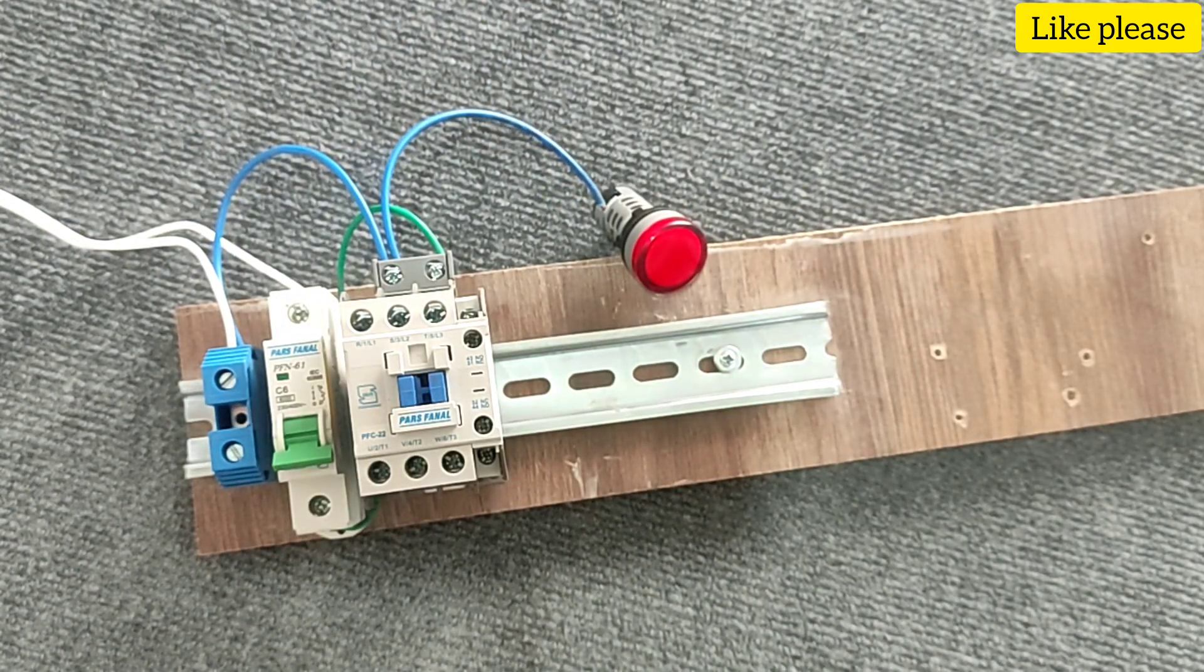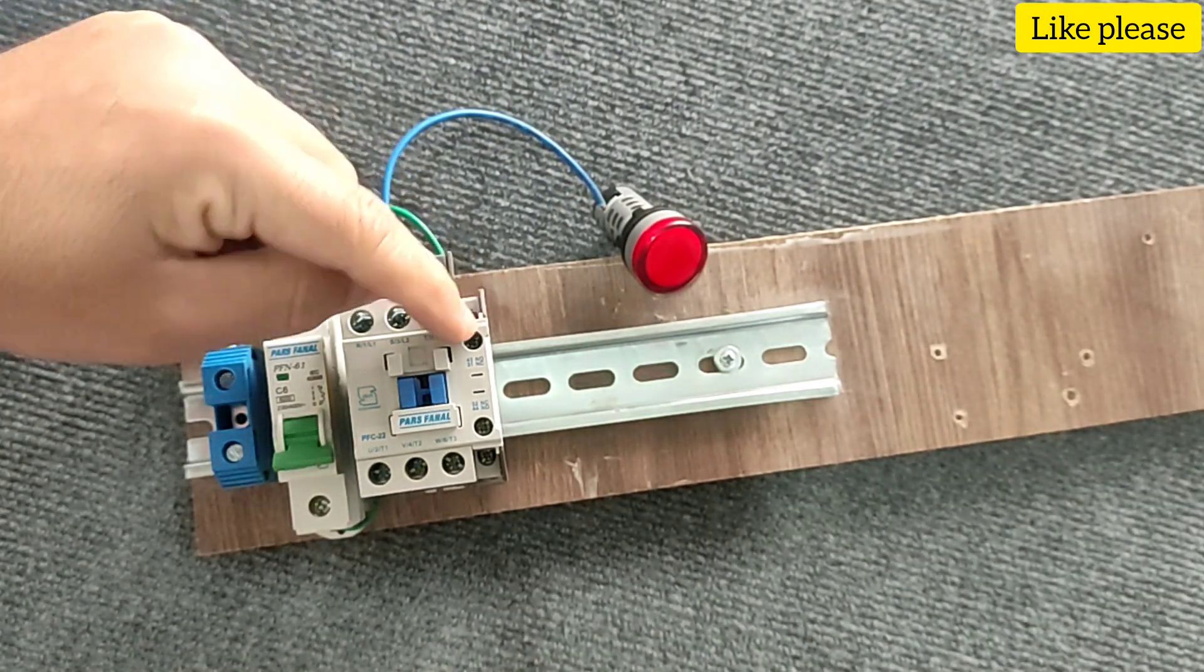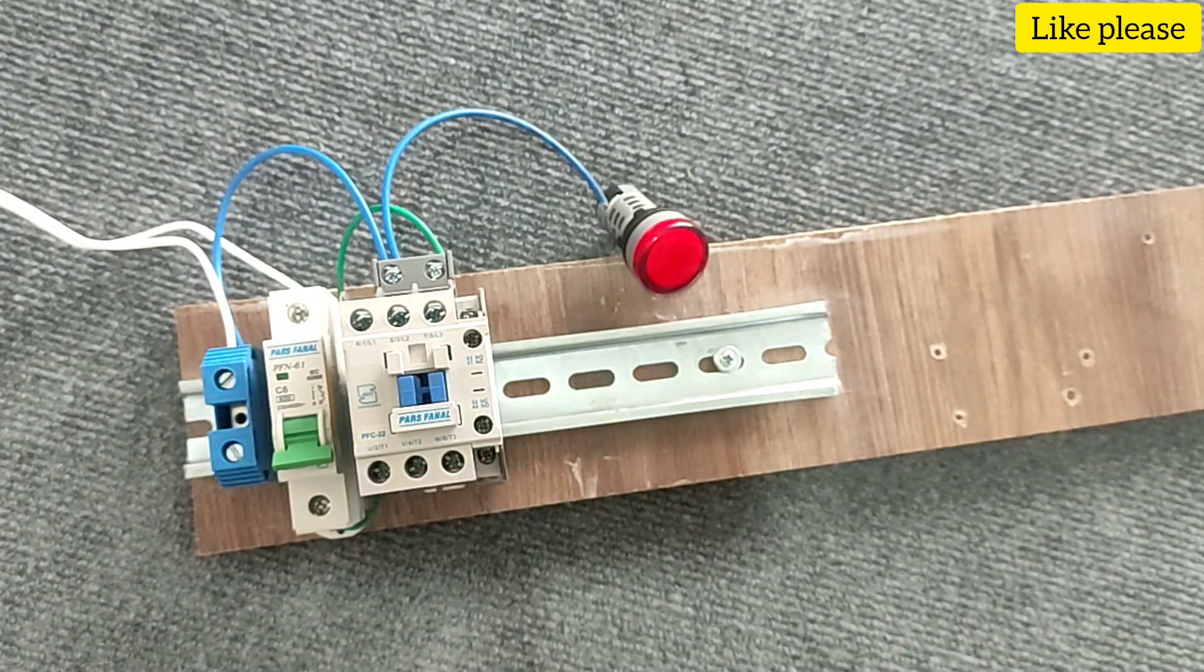Then we connect a phase wire from the input of the MCB switch to the input of the normal closed blade.